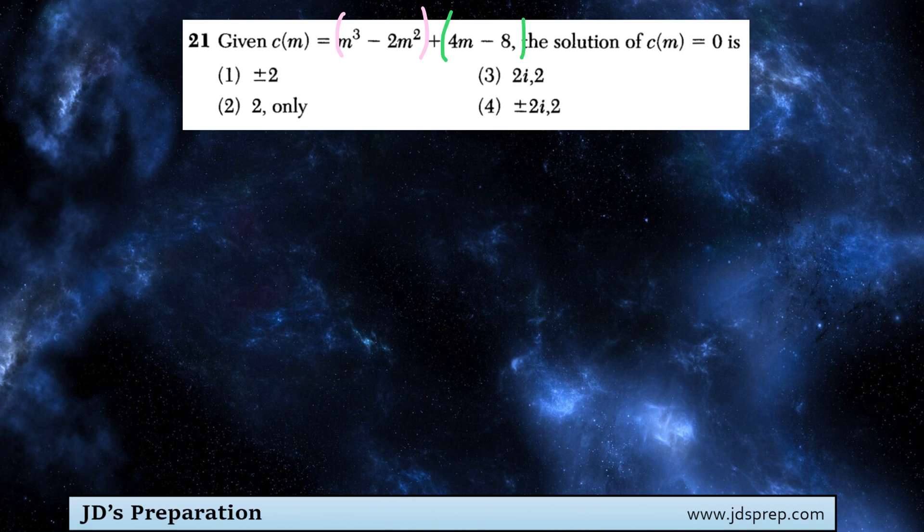So between m cubed minus 2m squared, we can take out a factor of m squared. And what we'd be left with is m minus 2.